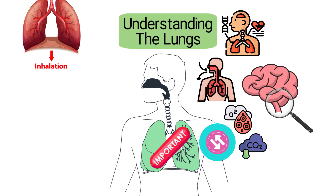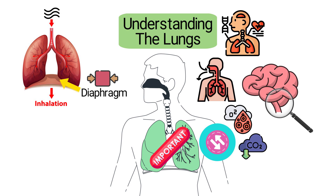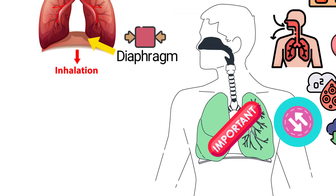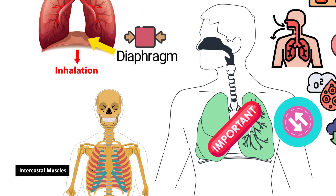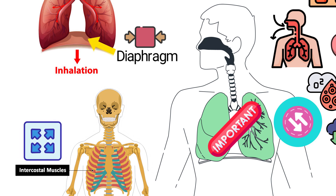When we inhale, the diaphragm — a dome-shaped muscle at the base of the lungs — contracts and flattens, creating a vacuum that allows air to flow into the lungs. Simultaneously, the intercostal muscles between the ribs lift the ribcage, further expanding the chest cavity.